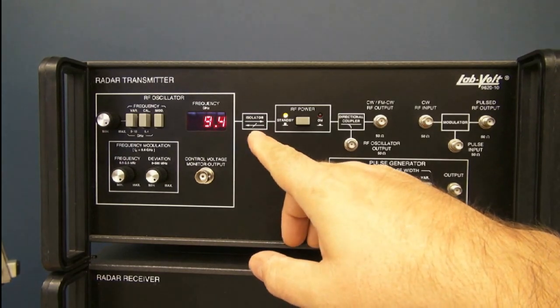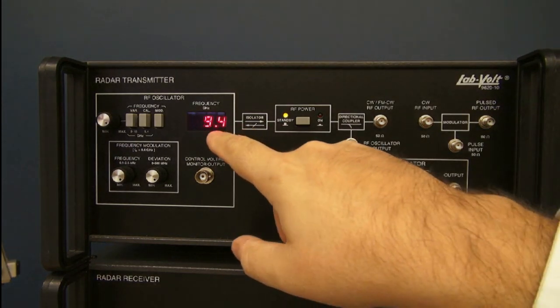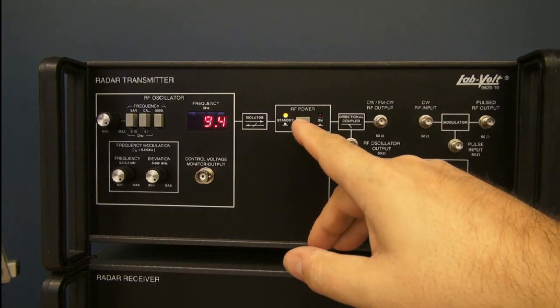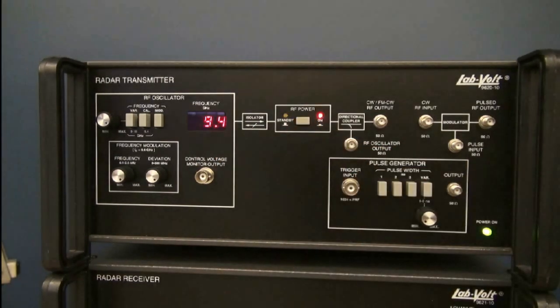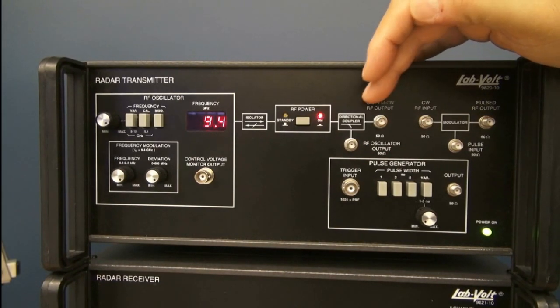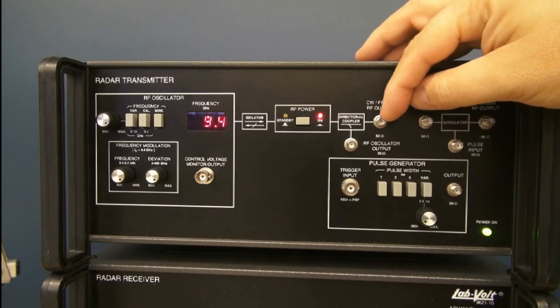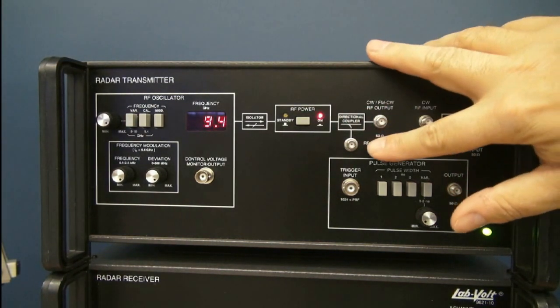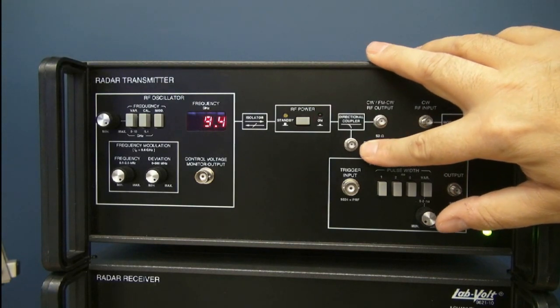This is followed by an isolator, which prevents the signal bouncing back into the oscillator. We then have a switch for our RF power, and this continuous wave can go to an SMA connector here for our main signal. A small part of it will be sampled through the directional coupler to be used in the demodulator.